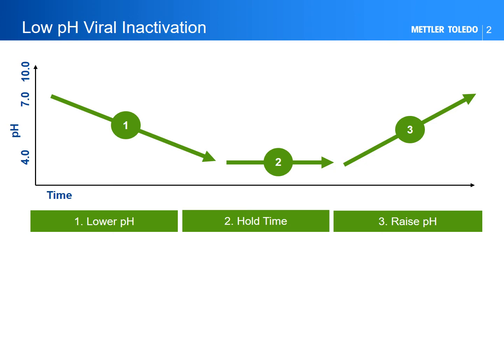Two: a time-based hold to ensure the low pH conditions have been reached or completed for the inactivation of the virus and the viral burden. Three: finally, a reversed titration back to a physiological or other buffered pH condition, which is favorable to both drug substance stability and further processing.